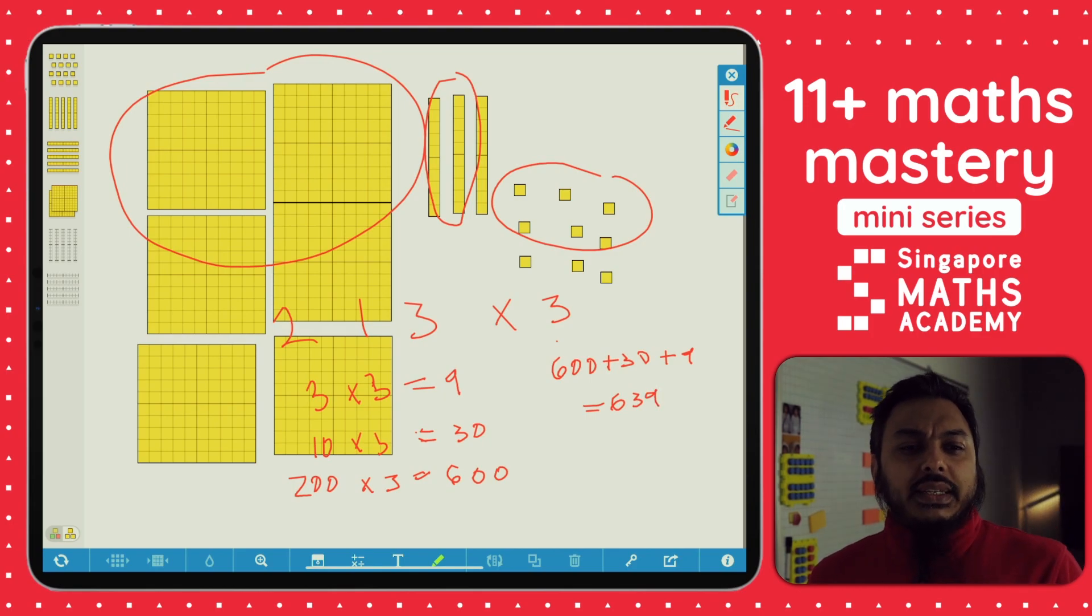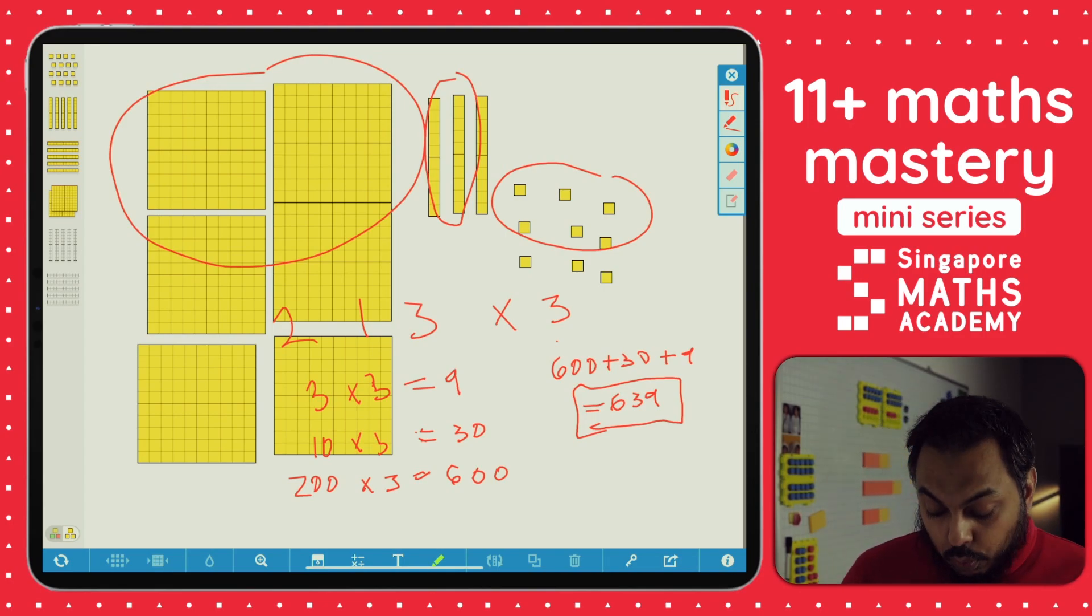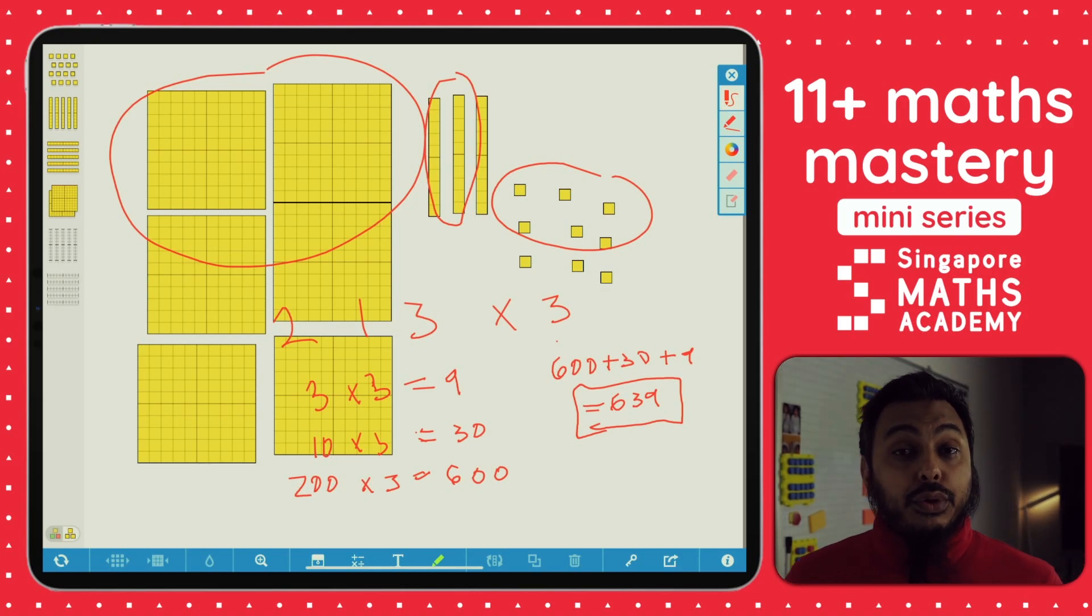A bit like what we did in one of our other videos, 600 plus 30 plus nine in our place value video. So hopefully that helped you to see this. 600 plus 30 plus nine is 639. So what we've done here is we've multiplied each place value by three in this case.